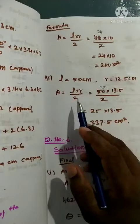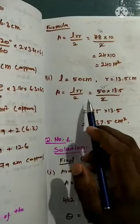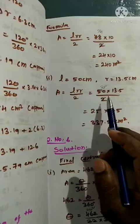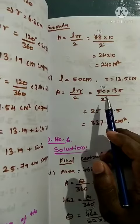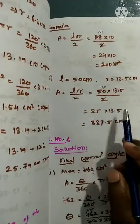Using the area formula, length into radius divided by 2. Length value is 50 cm and radius is 13.5 cm.